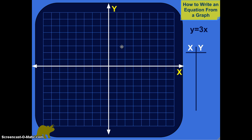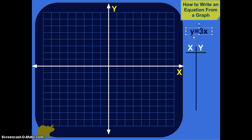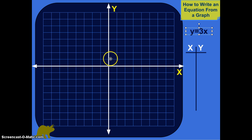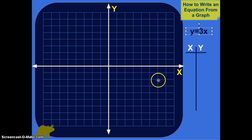Let's start with this equation: y equals 3x. What this means when we're dealing with coordinate planes is the y coordinate of every point on this line will be 3 times whatever the x is.